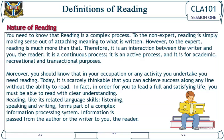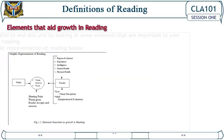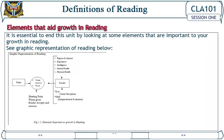Today, it is scarcely thinkable that you can achieve success along any line without the ability to read. In fact, in order for you to lead a full and satisfying life, you must be able to read with clear understanding. Reading, like its related language skills — listening, speaking, and writing — forms part of a complex information processing system. Information is passed from the author to you, the reader. It is essential to end this unit by looking at some elements that are important to your growth in reading.